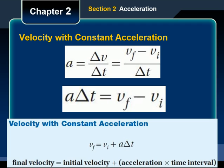Rearranging the equation, final velocity minus initial velocity divided by delta T equals acceleration. Multiplying both sides by delta T yields: acceleration multiplied by delta T equals final velocity minus initial velocity. Adding initial velocity to both sides gives the equation for final velocity: final velocity equals initial velocity plus acceleration multiplied by the time interval. You can use this equation to find the final velocity of an object after it has accelerated at a constant rate for any time interval.